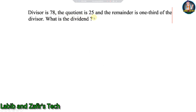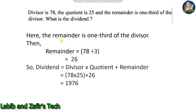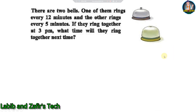Next problem: The divisor is 78, the quotient is 25, and the remainder is one third of the divisor. What is the dividend? Solution: Remainder = 78 ÷ 3 = 26. We know: dividend = (divisor × quotient) + remainder = (78 × 25) + 26 = 1950 + 26 = 1976.